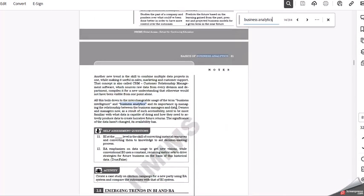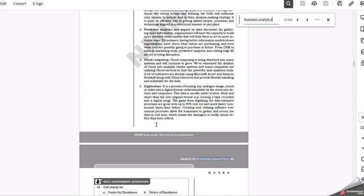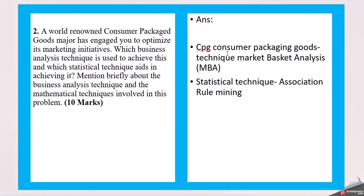Another one is mathematical model importance, relation between big data then emerging trends in BI and BA. Mathematical models again we can look for something but specific to this consumer goods, CPG basically consumer goods one.